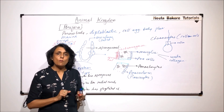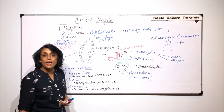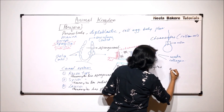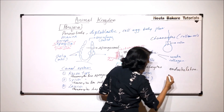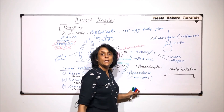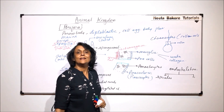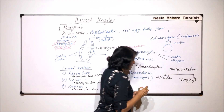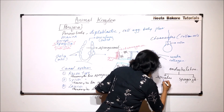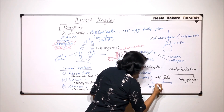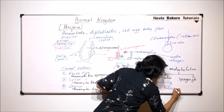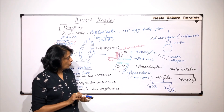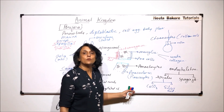In the mesoglia region, the endoskeleton is also present. The endoskeleton is of two types: it can be in the form of spicules, which are pointed needle-like structures, or in the form of spongy fibers. Spicules can be made up of calcium carbonate, known as calcareous spicules, or of silicic acid, known as siliceous spicules.